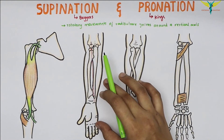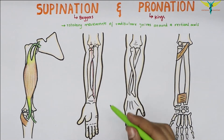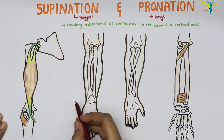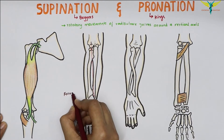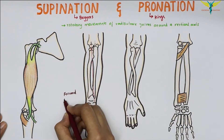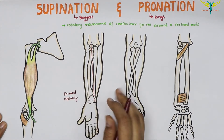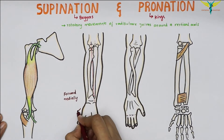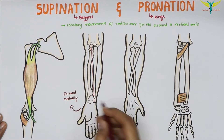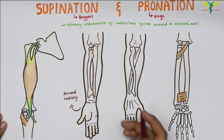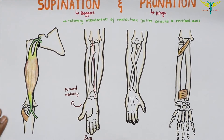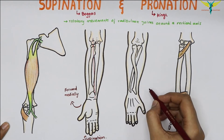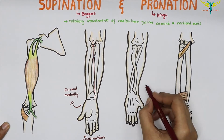The axis of movement in supination and pronation is not stationary. It moves forward and medially during supination, and it moves backward and laterally during pronation.